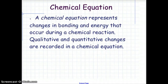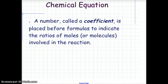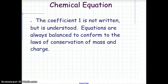A chemical equation represents changes in the bonding and energy that occur during a chemical reaction. Qualitative and quantitative changes are recorded in a chemical equation. A number called a coefficient is placed before formulas to indicate the ratio of moles or molecules involved in the reaction. The coefficient 1 is never written, but is understood. Equations are always balanced to conform to the laws of conservation of mass and charge.